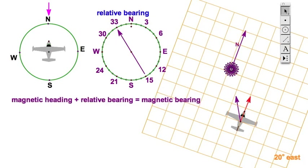And here comes a formula. The magnetic heading, which is represented by the red arrow on your airplane, together with the relative bearing, and that would be the purple arrow, added together is going to be the magnetic bearing. We're going to abbreviate this from now on. MH, magnetic heading, plus relative bearing, equals magnetic bearing.